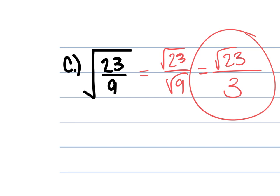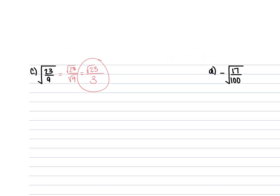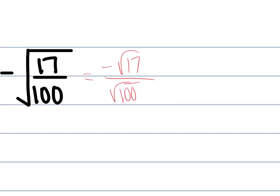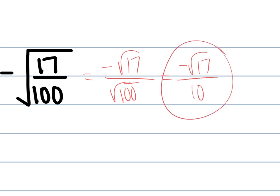Letter D has a negative. What do I do here? Split it — don't forget the negative. It's the negative square root of 17 over the square root of 100. What can we do with the square root of 17? Nothing. So it's the negative square root of 17 over 10, because the square root of 100 is 10.